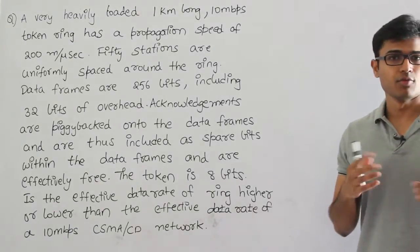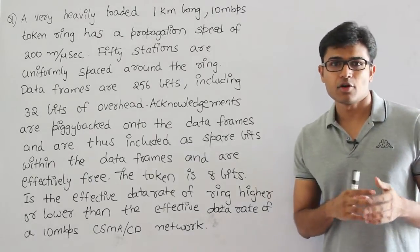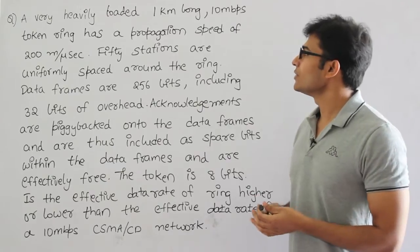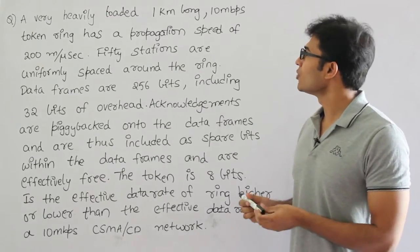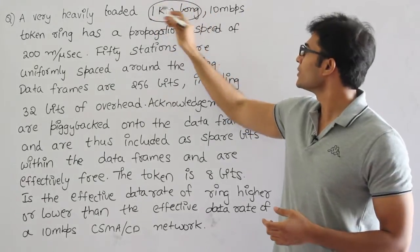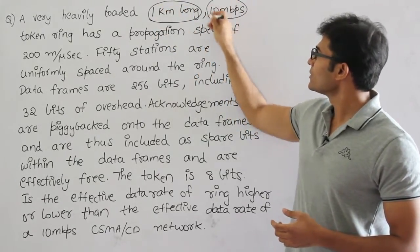This is a problem comparing both Token Ring and Ethernet. The parameters given are: a very heavily loaded one kilometer long LAN, which means the distance is one kilometer, and 10 Mbps bandwidth.